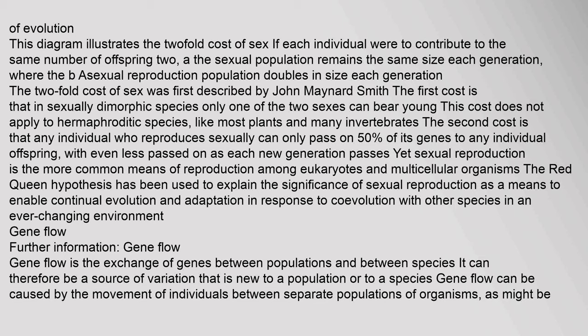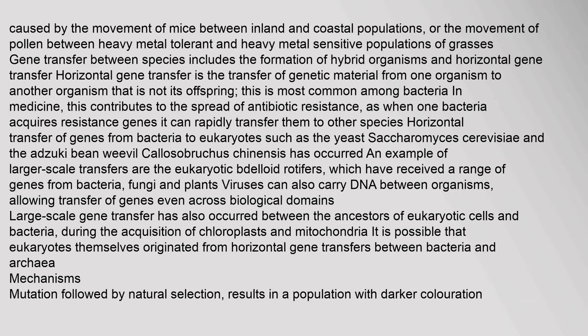The Red Queen hypothesis has been used to explain the significance of sexual reproduction as a means to enable continual evolution and adaptation in response to coevolution with other species in an ever-changing environment. Gene Flow: Gene flow is the exchange of genes between populations and between species. It can be a source of variation that is new to a population or to a species. Gene flow can be caused by the movement of individuals between separate populations, or the movement of pollen between heavy metal-tolerant and heavy metal-sensitive populations of grasses.